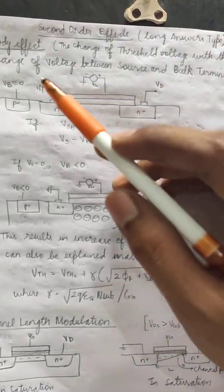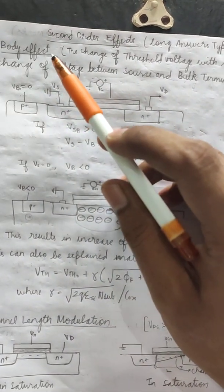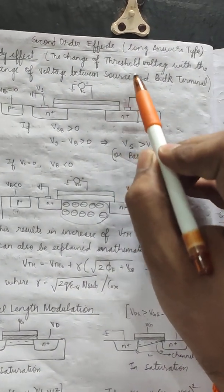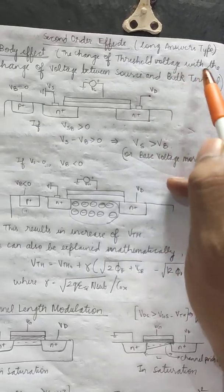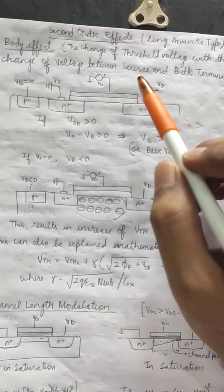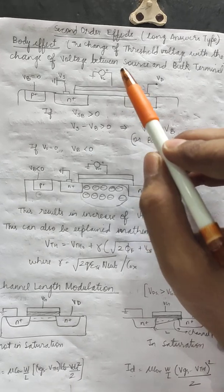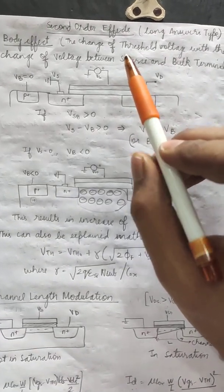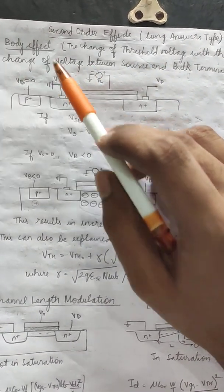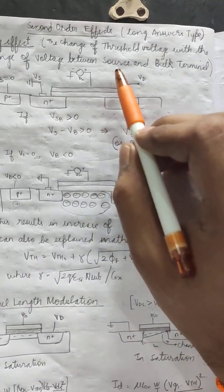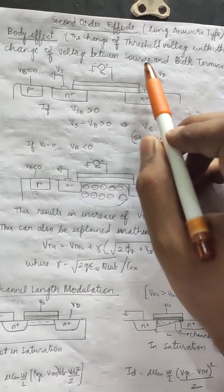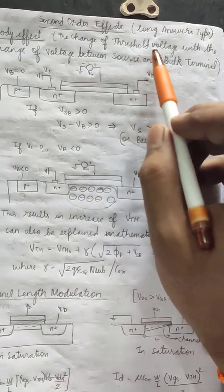First let's talk about the body effect. In the body effect, there is a change of threshold voltage with the change of voltage between the source and bulk terminal. Every MOSFET has a fixed threshold voltage, but as per this body effect, when there is a change of voltage between the source and the bulk terminal, the threshold voltage changes.